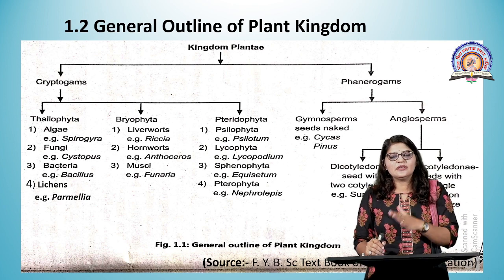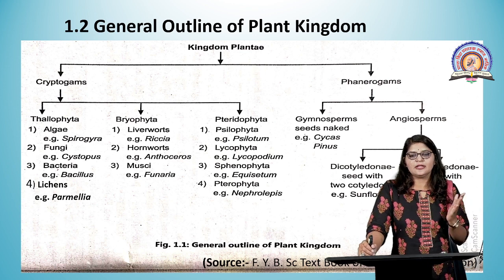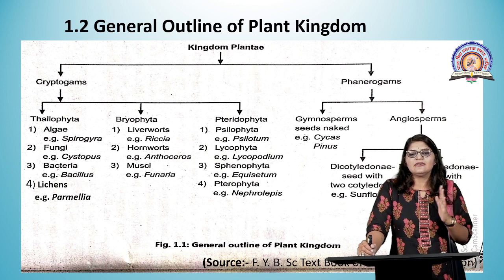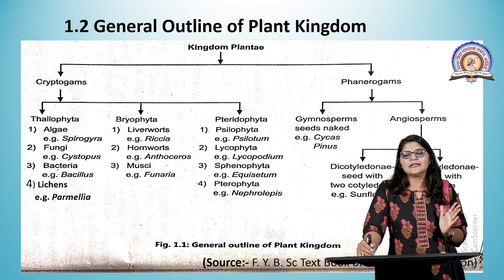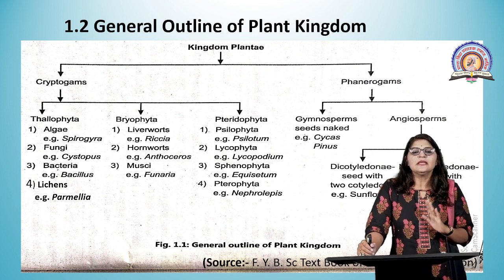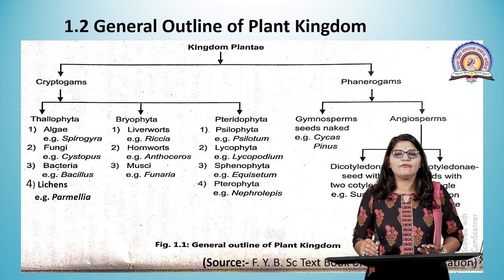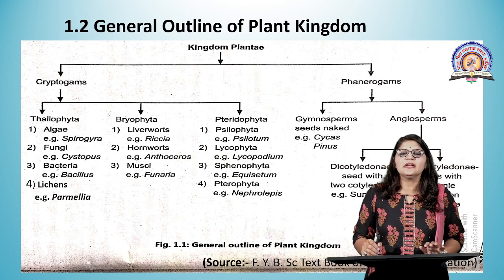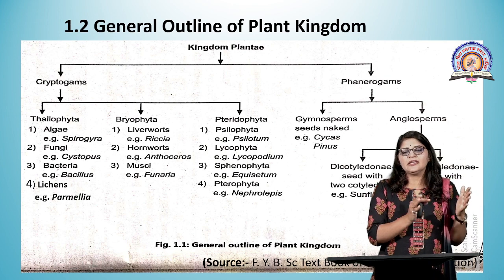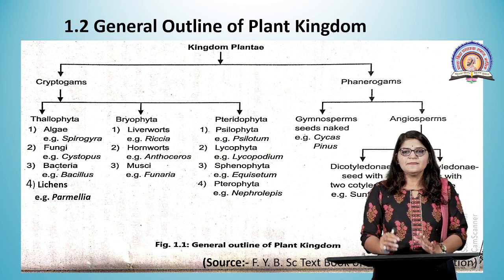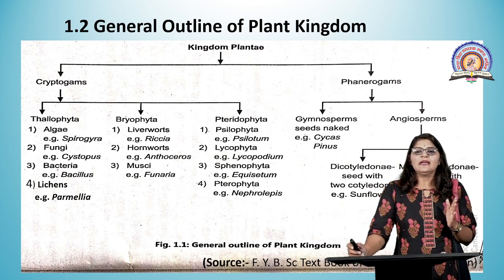Pteridophyta is also called the vascular cryptogames. It includes Psilophyta (example: Psilotum), Lycophyta (example: Lycopodium), Sphenophyta (example: Equisetum), and Pterophyta (example: Nephrolepis). These are cryptogames — non-flowering, non-seed-bearing plants. Phanerogames are flower and seed-bearing plants, divided into Gymnosperms and Angiosperms.